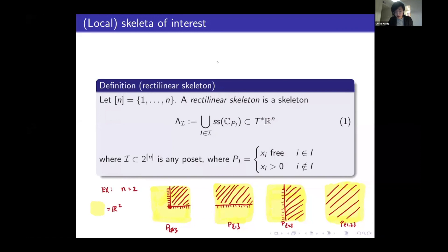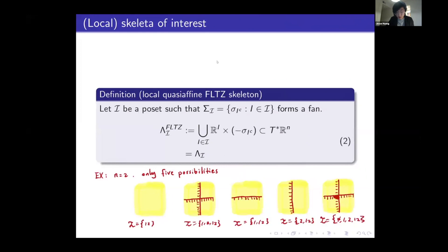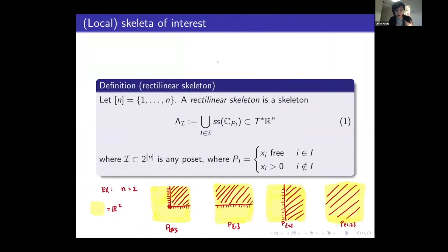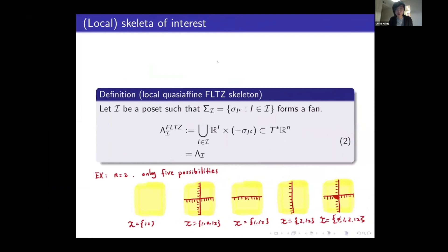As experts might notice, this skeleton we just introduced is slightly different from the FLTZ construction — the well-known mirror skeleton construction for toric varieties. The skeleton we considered recovers the definition of the FLTZ skeleton when the pole set we take is the indexing pole set of a simplicial fan. One can check that this rectilinear skeleton coincides with the FLTZ skeleton in that case.